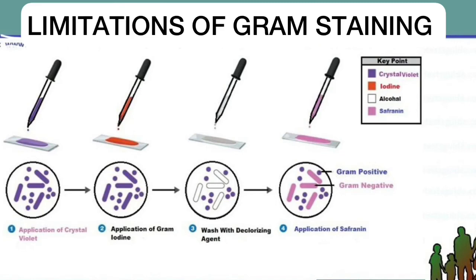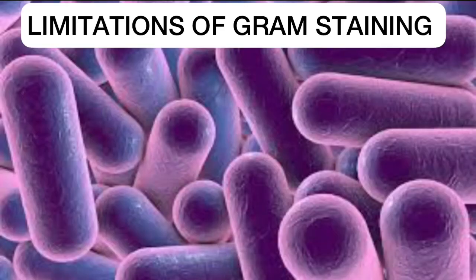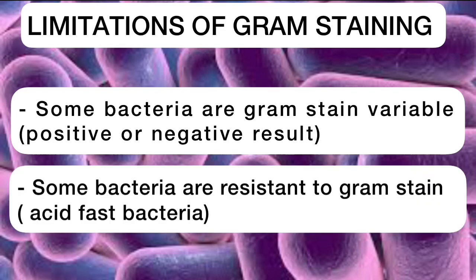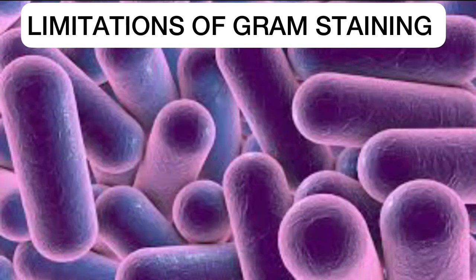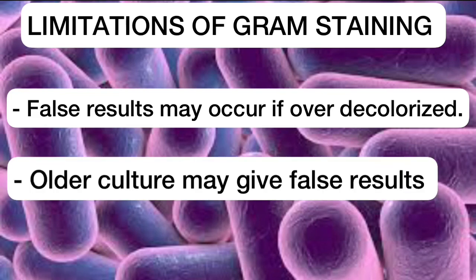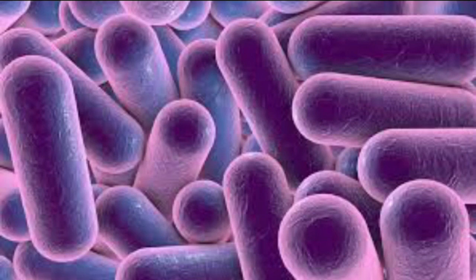In as much as gram stain is important in identifying bacteria, it also has some limitations. Some bacteria are gram stain variable — at one point they may appear as gram positive and at another point as gram negative. Also, some bacteria are resistant to gram stain, such as the acid fast bacteria. Thirdly, false results may occur if the smear is over-decolorized. Older cultures may also give false results. Thanks for watching and don't forget to subscribe and turn on your notifications.